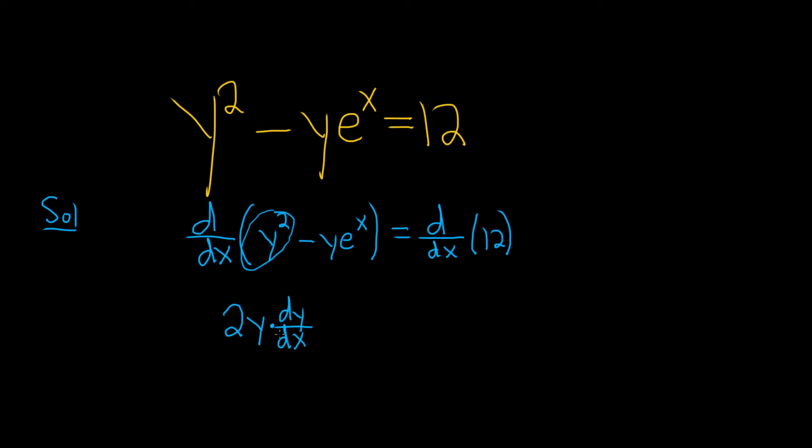Again, it's the chain rule. Every time you use implicit differentiation in problems like this, you're thinking of y as a function of x. So you bring down that 2, and then there's a 1 here now. And then you multiply by the derivative of the inside, which is just dy/dx.